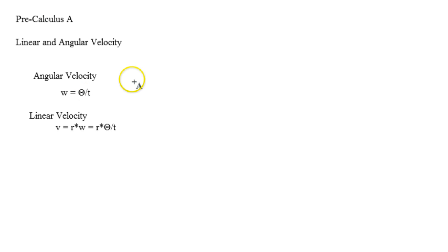Now angular velocity, and once again, theta needs to be in radians. You can't have degrees here, because otherwise if you have degrees you're going to mess up the numbers big time. So theta needs to be in radians.